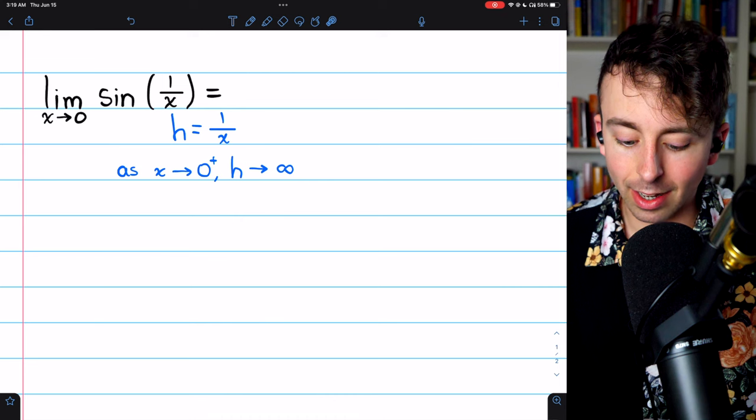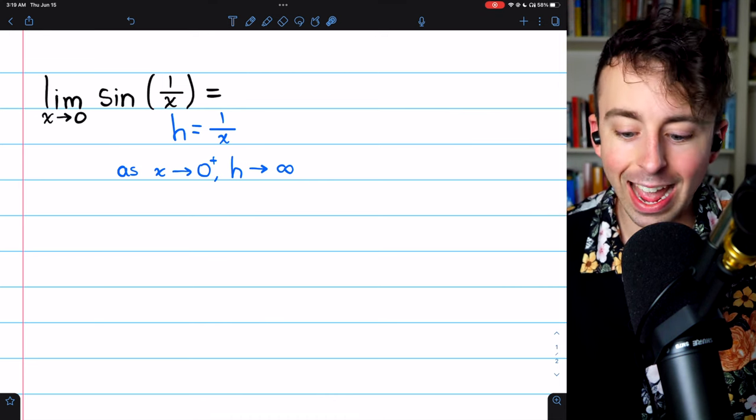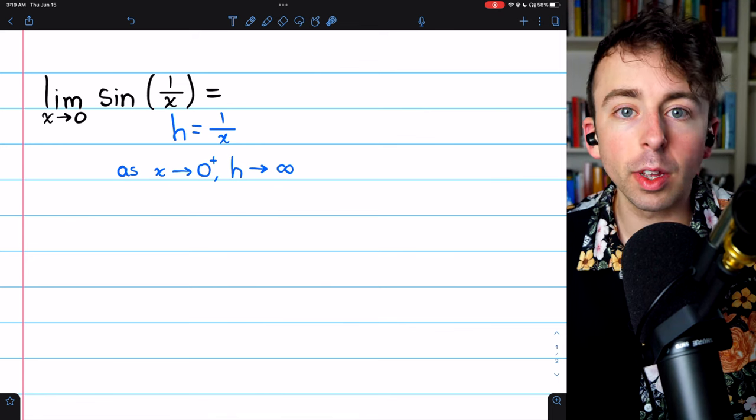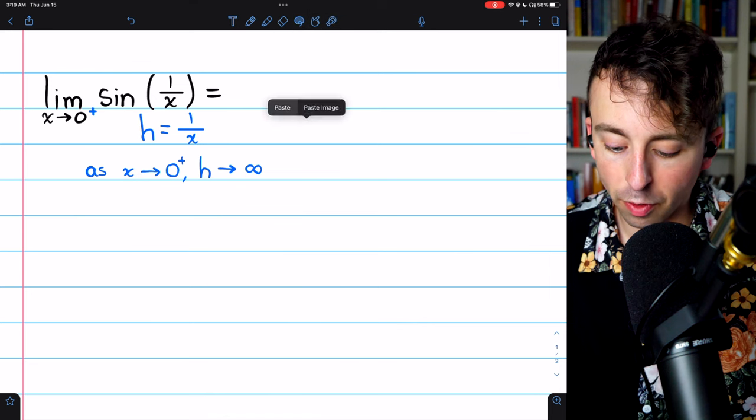Like we already said, as x approaches 0 from the right, this inside function, which we are calling h, is going to positive infinity. So the right side of our limit, as x approaches 0 from the right,